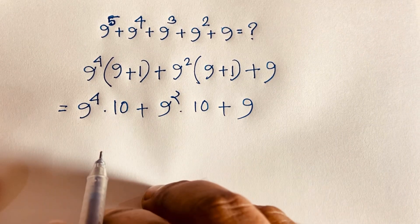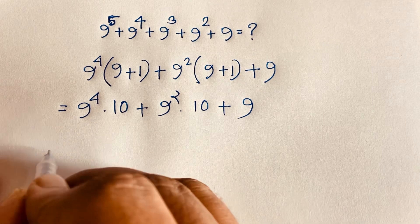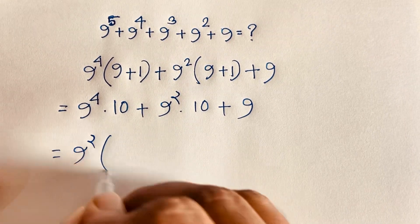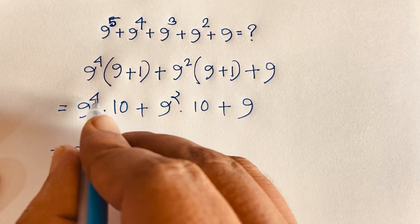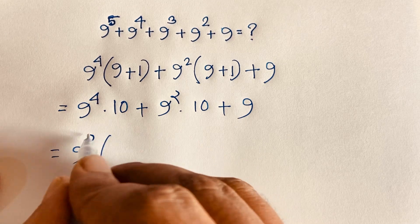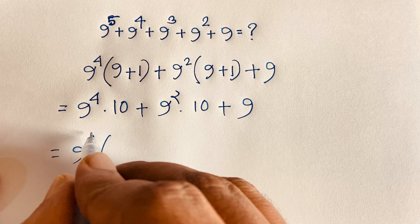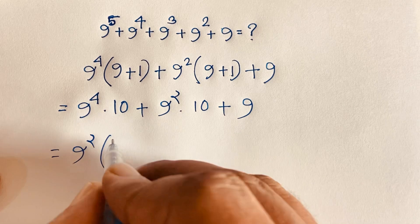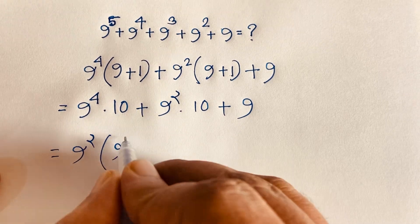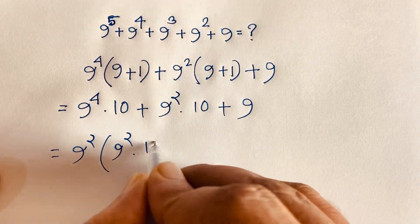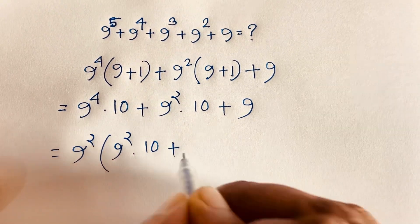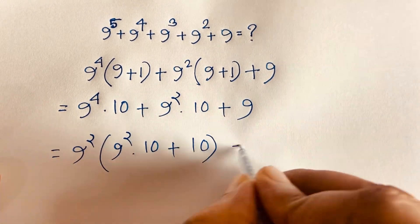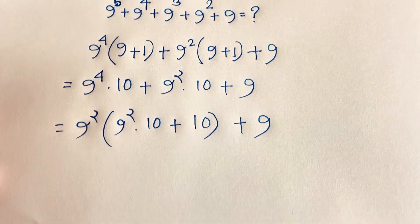Here 9 to the power 2 is again common, so I take 9 to the power 2 outside the bracket. Then 9 to the power 4 divided by 9 to the power 2 gives 9 to the power 2, times 10, plus 10, plus 9.